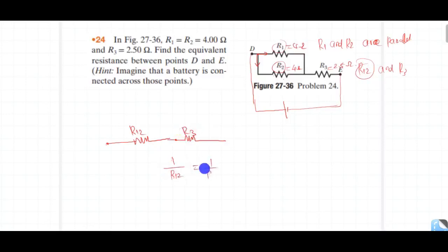1 by R12 equals 1 by R1 plus 1 by R2. Here R1 is equal to R2, so this equals 2 by R. R12 is equal to 2 ohm.